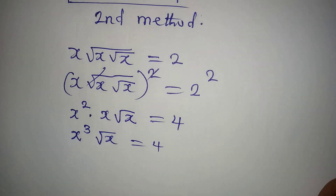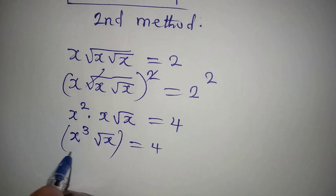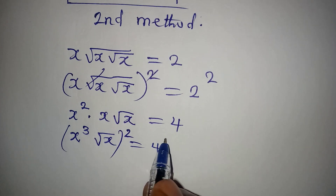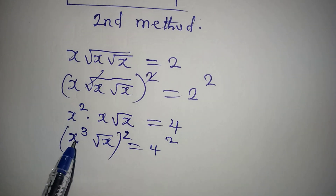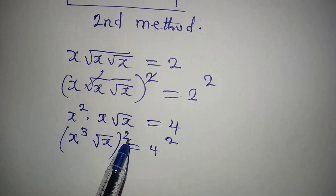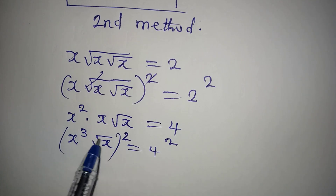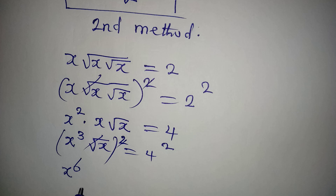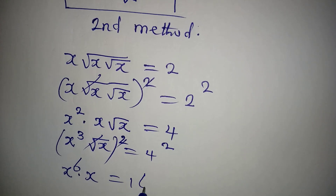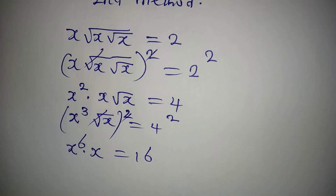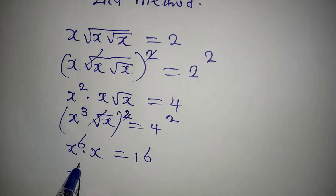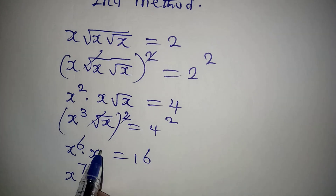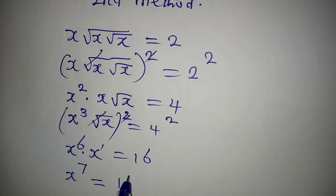Now square both sides again. x to the power of 3 squared gives x to the power of 6, and the square root of x squared gives x. Multiplying these together, since x to the power of 6 times x to the power of 1 equals x to the power of 7, we get x to the power of 7 equal to 16.